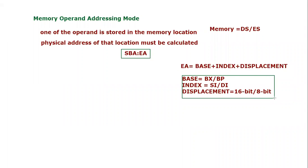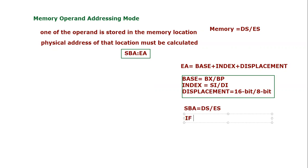Now let's talk about segment base address — where we will find it. The segment base address is basically the starting address of the segment register, and since we are talking about data memory it will come either from the data segment or the extra segment. Usually it will be the data segment unless ES is explicitly defined. If the SBA is not given or not mentioned, then we use SBA equal to data segment by default.